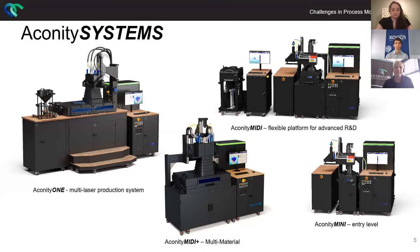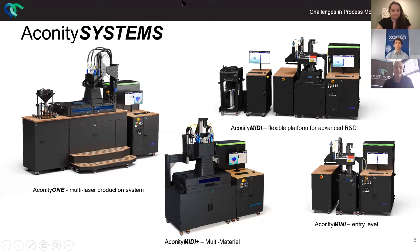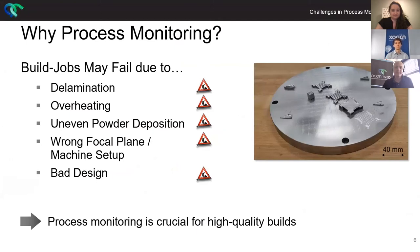Here are our four basic machines. The Econity Mini is our entry level system. Then there's the Econity MIDI and the MIDI Plus, which both provide exchangeable process chambers, which can be used for parallelized setup times. And on the left hand side in a four laser configuration is our full flagship production system, the Econity One.